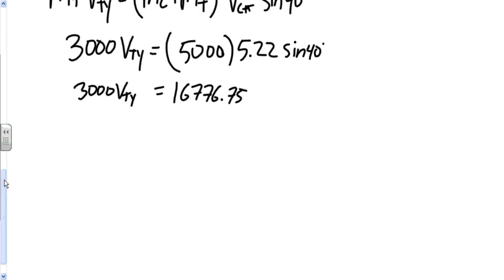Now it's as simple as dividing by 3,000. I find the velocity of the truck in the y direction is 5.6 m/s. And of course, that's directed north.